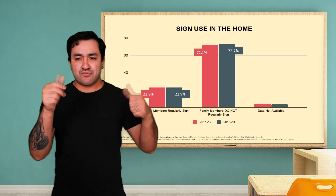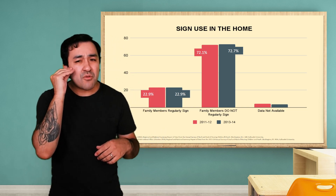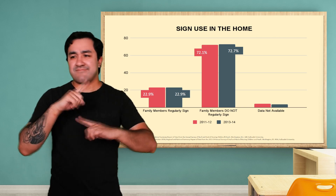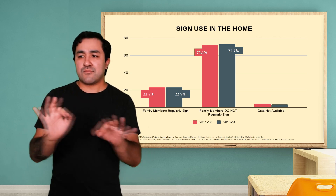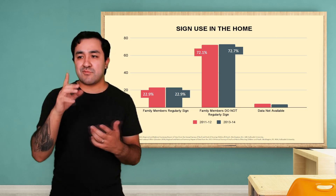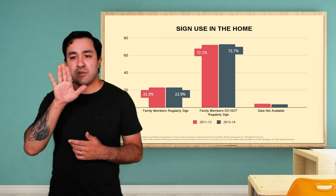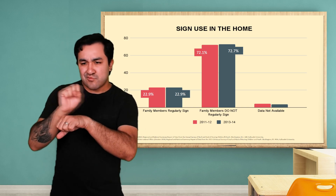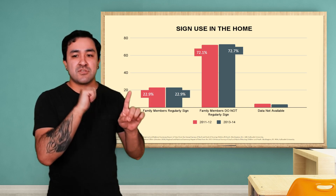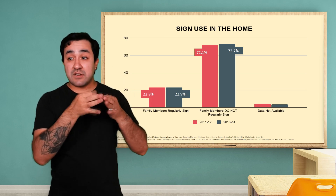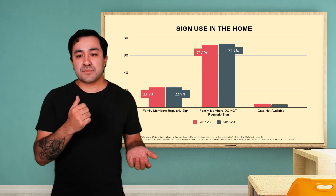This first graph displays American Sign Language use in the home. As we can see, most deaf students from 2011 to 2014 did not regularly sign with their families. Only 22.9% did. So, let's think about what this might mean for these students.